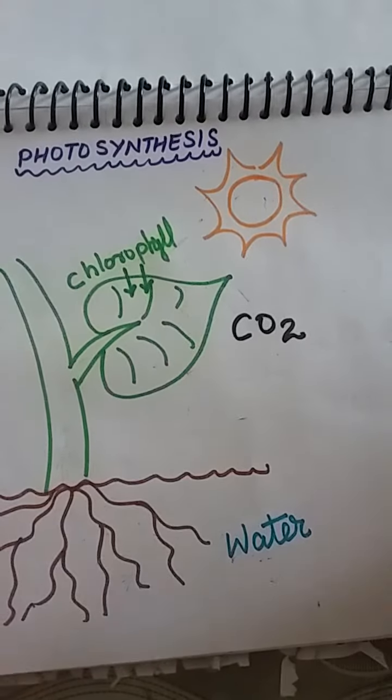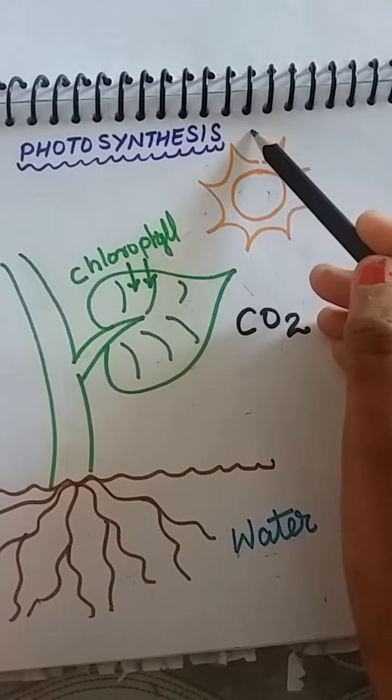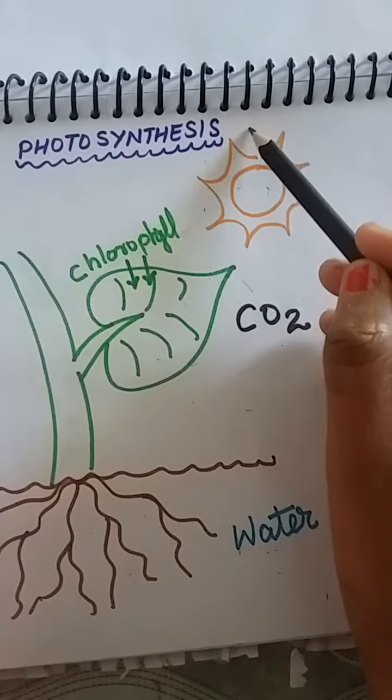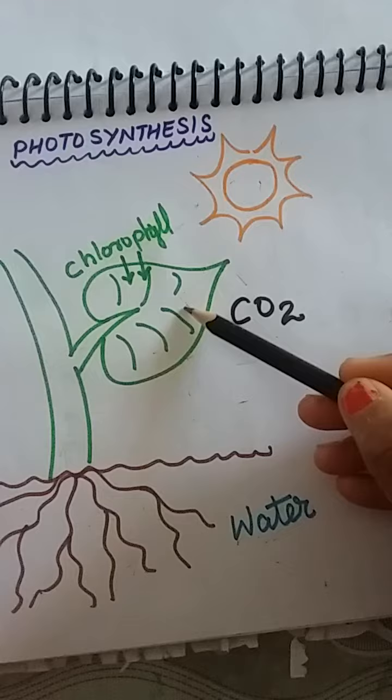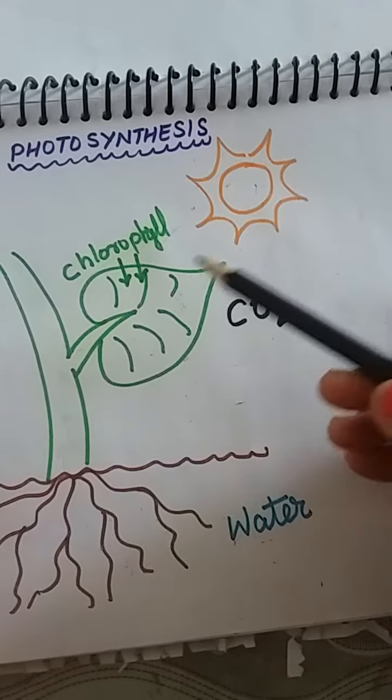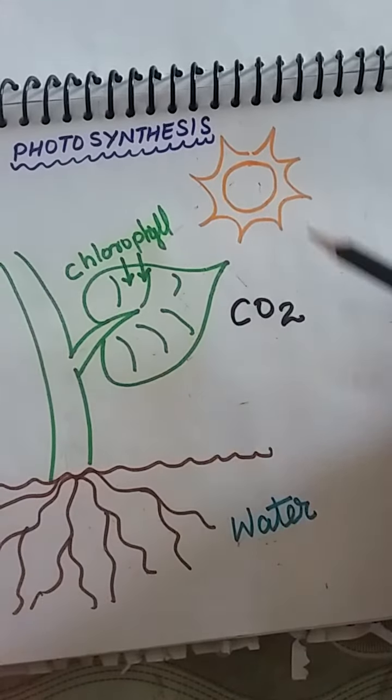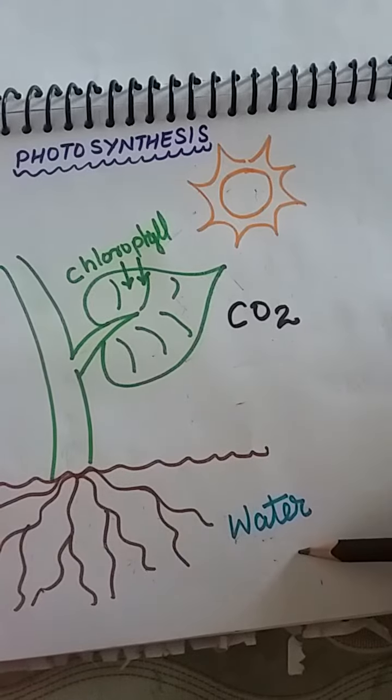Good morning everyone. Today we learn what is photosynthesis. Photosynthesis is a process in which all green plants make their food by using sunlight, carbon dioxide, and water.